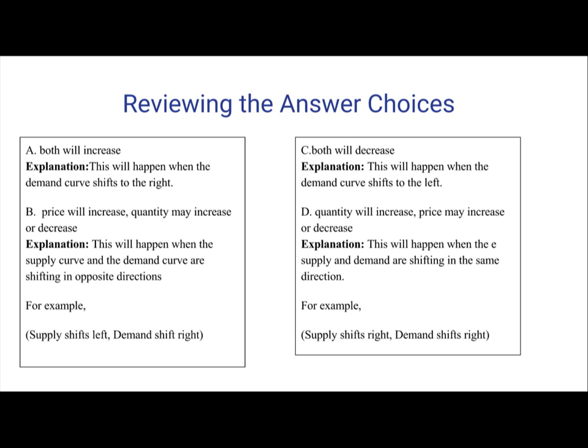B: Price will increase, but quantity may increase or decrease. This will happen when the supply curve and the demand curve are shifting in opposite directions. For example, supply shifts left and demand shifts right, or supply shifts right but demand shifts left — opposite directions.